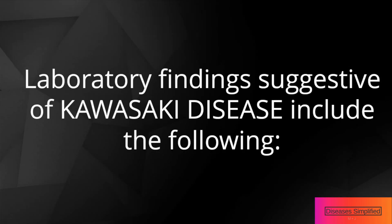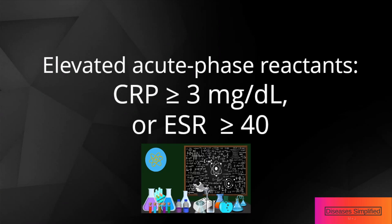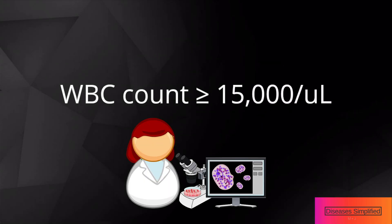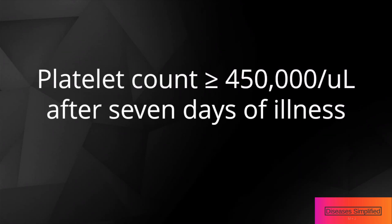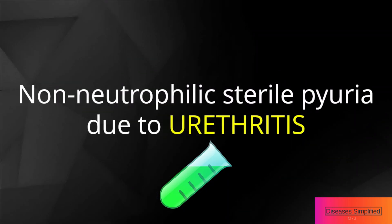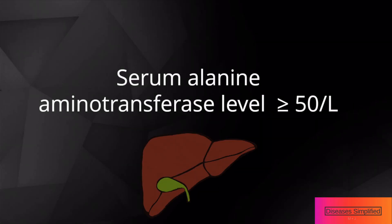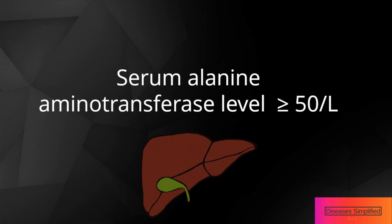Laboratory findings suggestive of Kawasaki disease include the following: elevated acute phase reactants CRP above 3 mg per deciliter or ESR above 40; WBC count above 15,000 per microliter; normocytic, normochromic anemia for age; platelet cell count above 450,000 per microliter after seven days of illness; non-neutrophilic sterile pyuria due to urethritis; and alanine aminotransferase level above 50 units per liter.